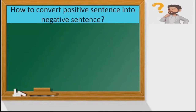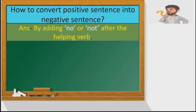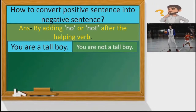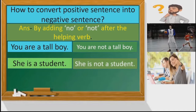How to convert a positive sentence into a negative sentence? Children, we can convert a positive sentence into a negative sentence by adding 'no' or 'not' after the helping word. For example: 'You are a tall boy' becomes 'You are not a tall boy.' Second example: 'She is a student' becomes 'She is not a student.'